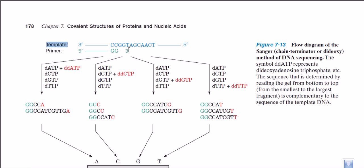For example, if the template has a C, the polymerase attaches a G opposite to it, then another G against another C, then C, then A, and so on. It attaches nucleotide sequences according to their complementarity and goes on to finally make the full complementary sequence.